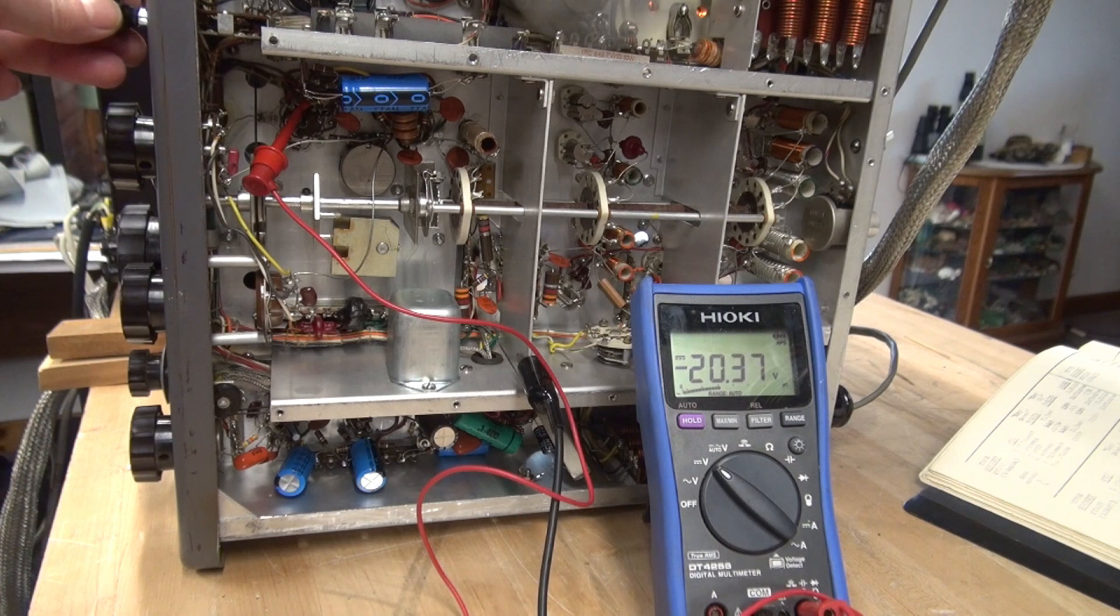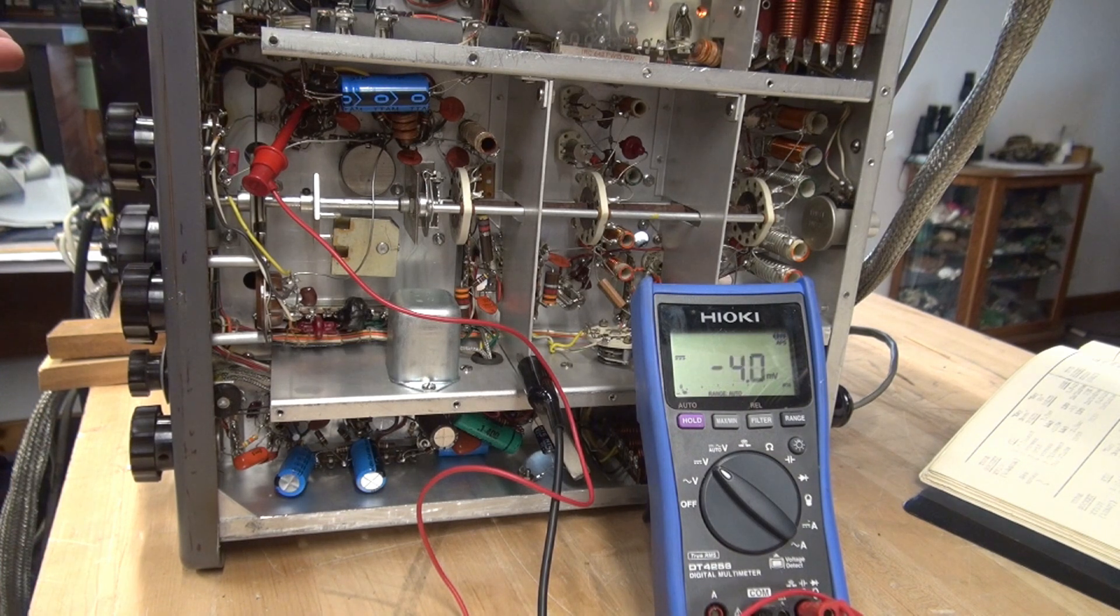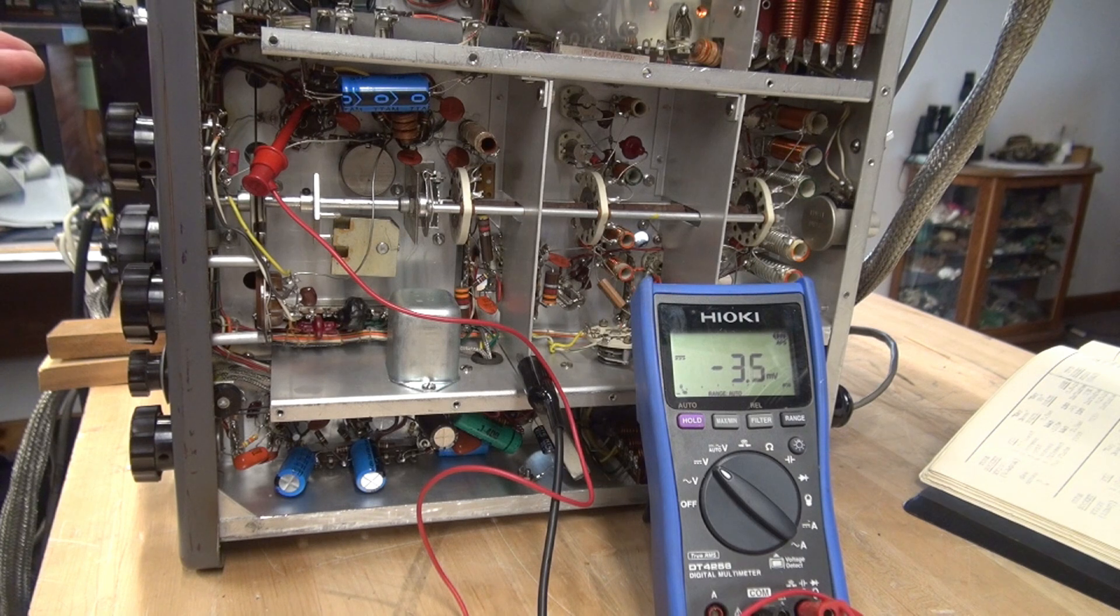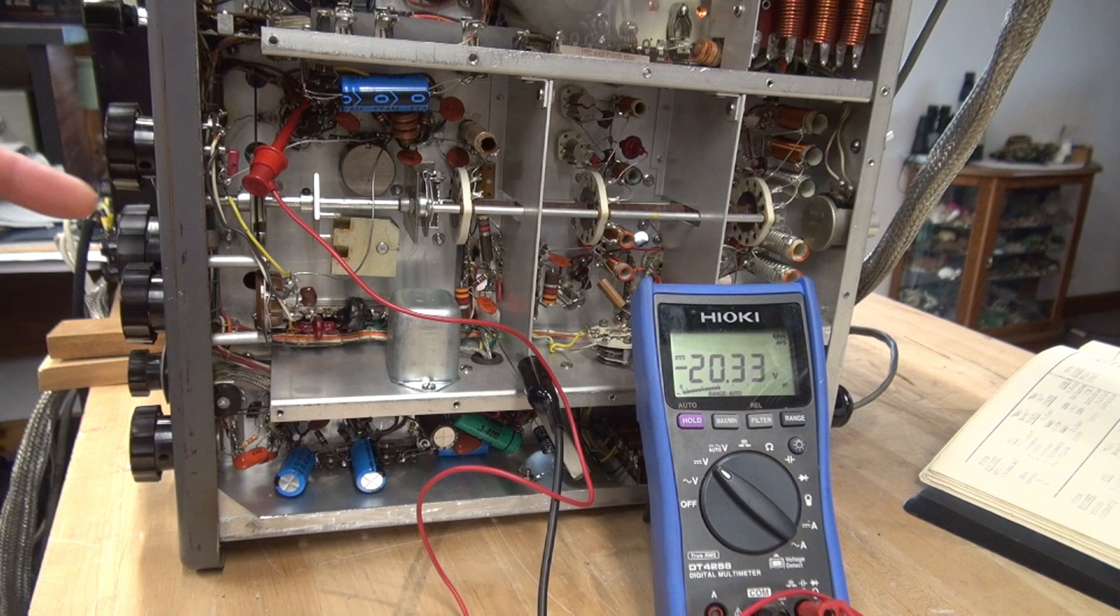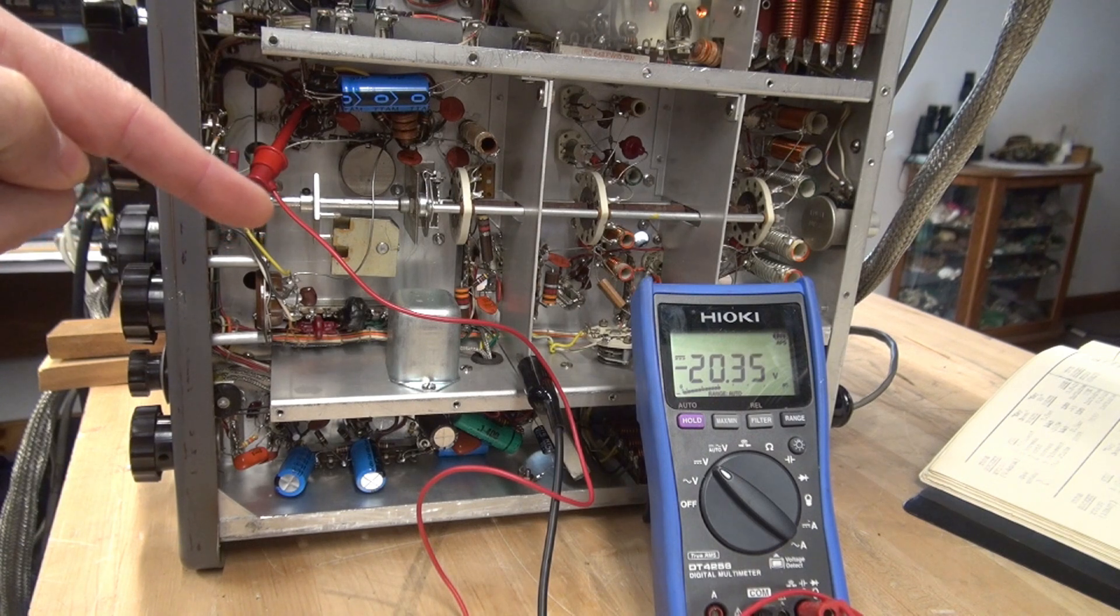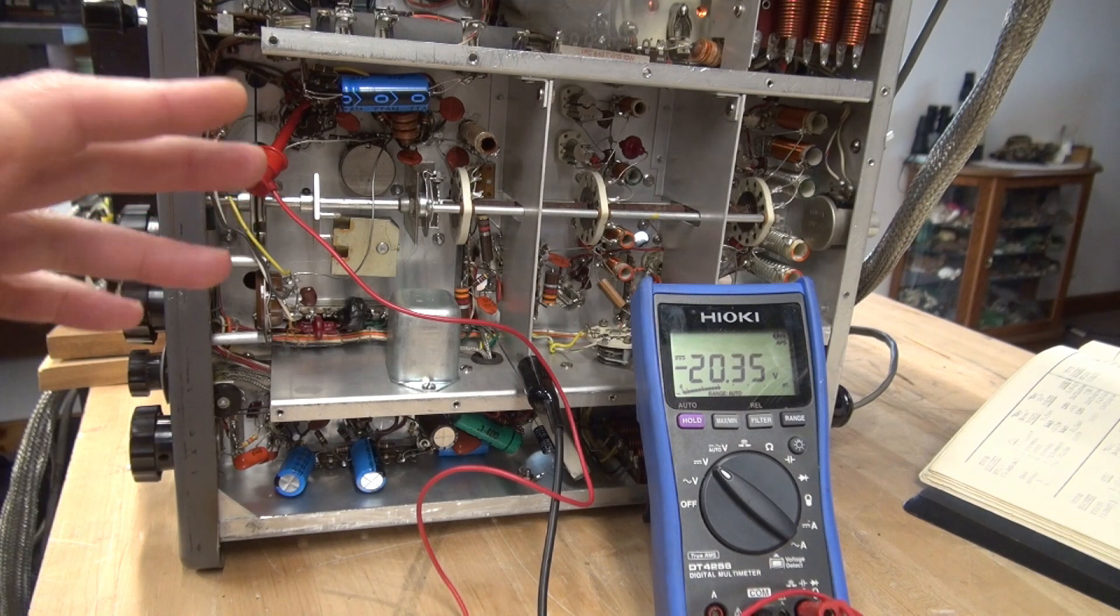When I go to zero, it's supposed to ground that pin, which activates the VFO. We're getting close to zero. But the thing that's concerning is we're not getting the negative 45, and I believe I know what's causing it.